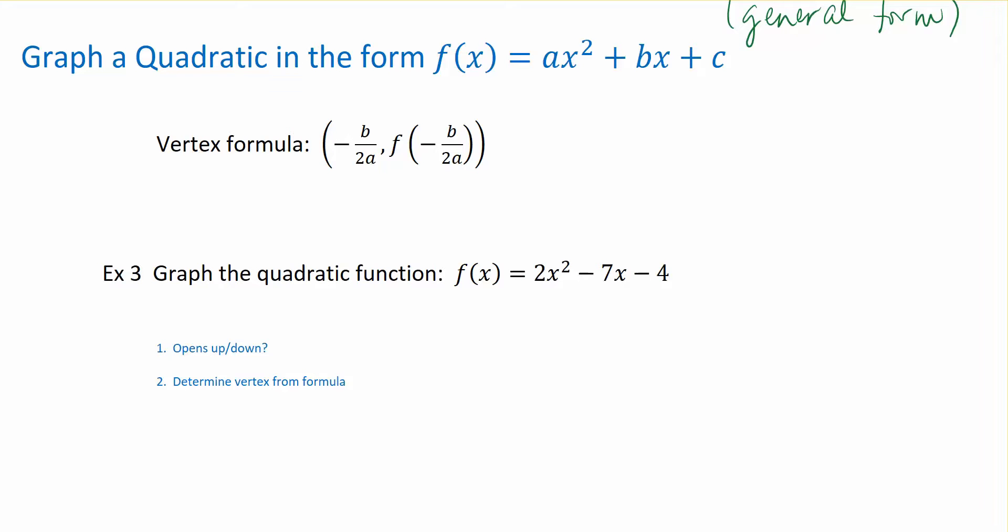We've been talking about how to graph quadratic equations. In the previous video, we looked at how to do it if it was already in vertex form. More than likely, we encounter quadratic equations that are in this general form: ax² + bx + c. It's not in vertex form, so I can't identify the vertex given the way it's written. So what do you do?